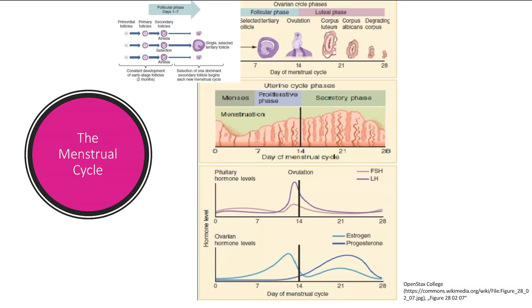In the menstrual cycle, this is super important — can't emphasize how important this is. There are two phases: the follicular phase and the luteal phase.